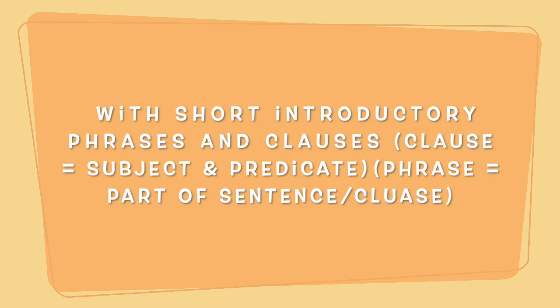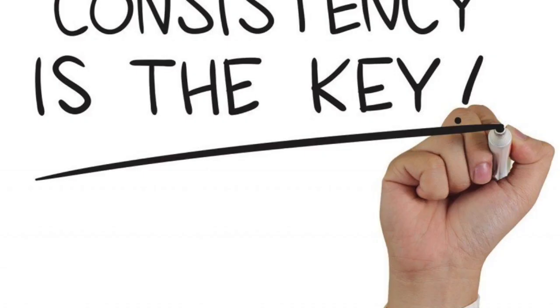Number one: with short introductory phrases and clauses. One important rule to remember is if you use commas after short introductory phrases and clauses, do so consistently throughout your work. An example where you could place a comma is in this sentence: 'By 2021, smartphone use was widespread.' You could place the comma after 2021, or it wouldn't be needed at all.